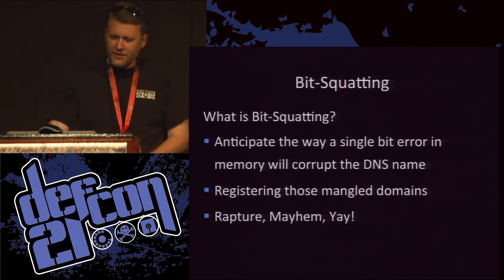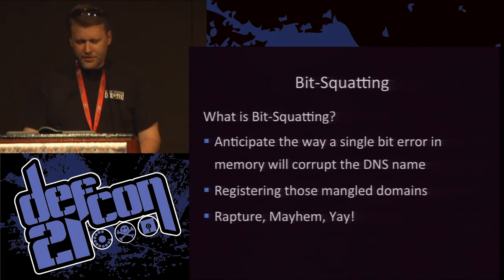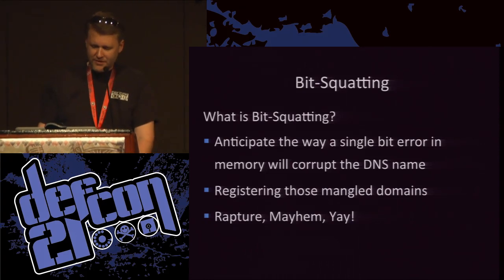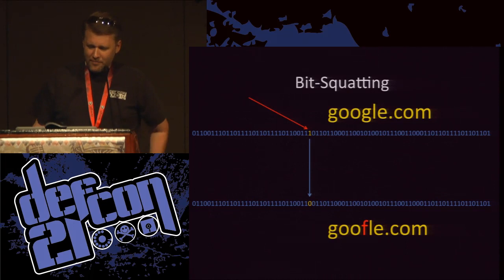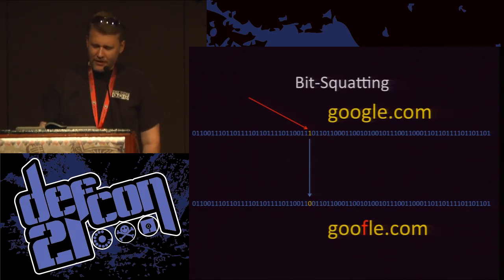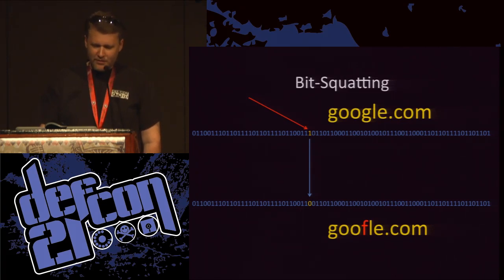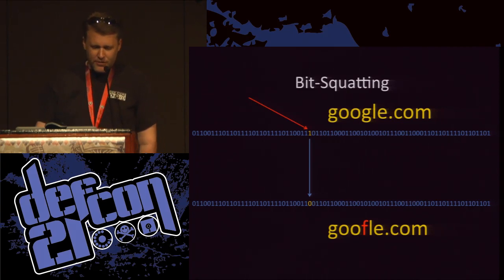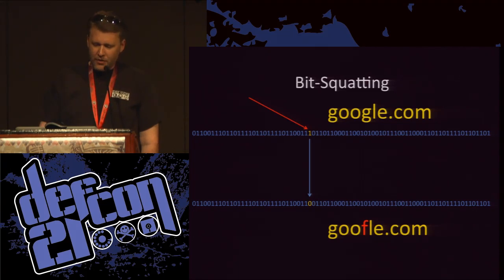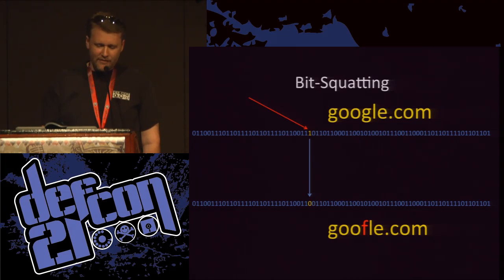DNS bit squatting is anticipating the ways that these errors will mangle DNS names, registering those domains, and then answering those misdirected requests. In memory, the domain name for google.com looks like this. If a high energy proton strikes one of the individual bits of memory, flipping its state from one to zero, your browser just asked DNS to resolve gooful.com and it'll happily go get the answer for you. DNSSEC isn't going to help you here and there's very little that could have prevented this.